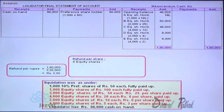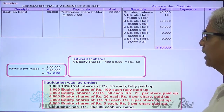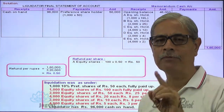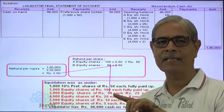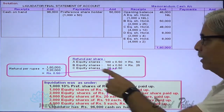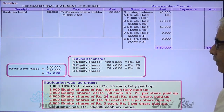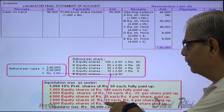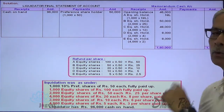So for category A shares with ₹100 face value, at 50 paise per rupee, the refund per share is ₹50. For category B shares with ₹50 face value, at 50 paise per rupee, the refund per share is ₹25. For category C shares with ₹20 face value, the refund per share is ₹10. For category D shares with ₹10 face value, the refund per share is ₹5. For category E shares with ₹5 face value, at 50 paise per rupee, the refund per share is ₹2.50.